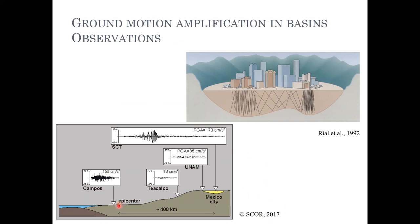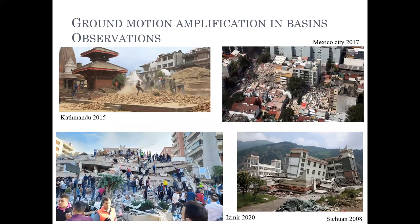The epicenter was located around 400 kilometers from Mexico City, which is built on top of a sedimentary basin. Ground accelerations near the epicenter were very similar to those recorded inside the basin — 150 and 170 centimeters per second squared — and the significant amplification is due to the sedimentary basin. The same phenomenon occurs in other places: Kathmandu 2015, Sichuan 2008, and Izmir 2020, where structures built on soft sediments experienced strong ground shaking and major damage.